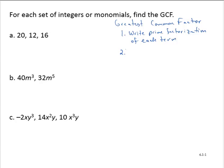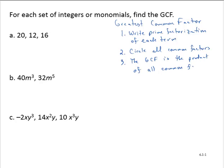Second, we will circle all the common factors. And then third, the GCF is the product of all common factors, each raised to the lowest power that appears.